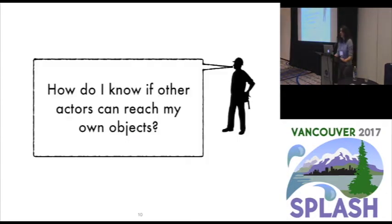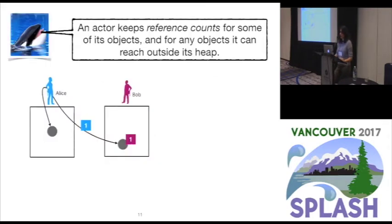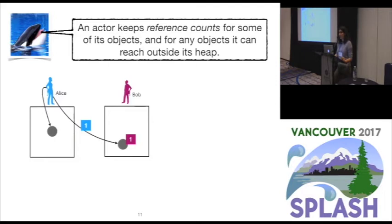If an actor starts a garbage collection cycle, how does it know that other actors can reach its objects? In Orca, we keep reference counts for some objects. Namely, an actor will keep reference counts for the objects it owns and has shared, and for objects it can reach outside its heap. For example, we have two actors, Alice and Bob. Alice has an object in her heap not reachable by anyone else — that object does not need any reference counting. But in Bob's local heap, there is an object reachable from outside, from Alice, and therefore Bob must keep a reference count for those objects. Alice must also keep a reference count because she can reach an object that is not hers.